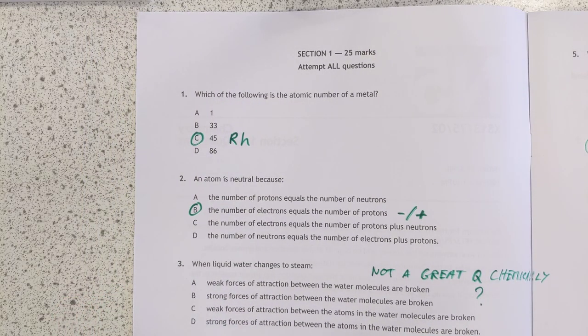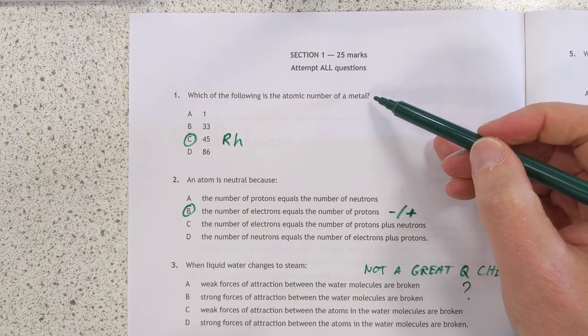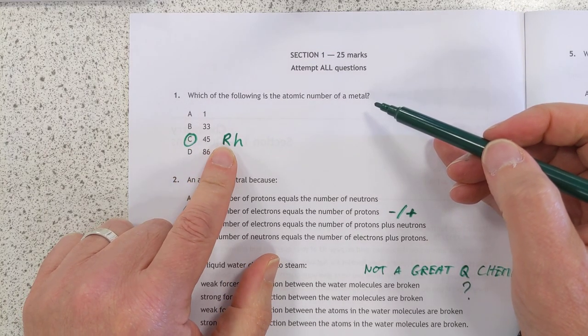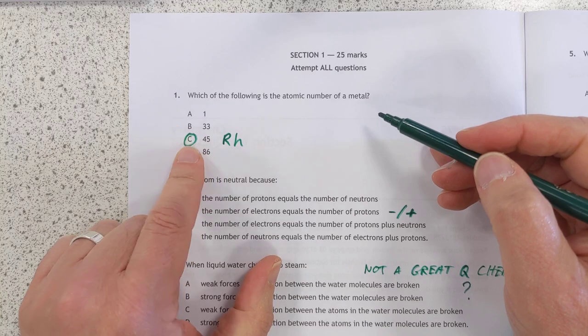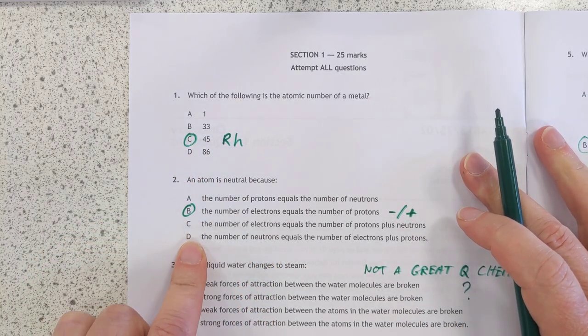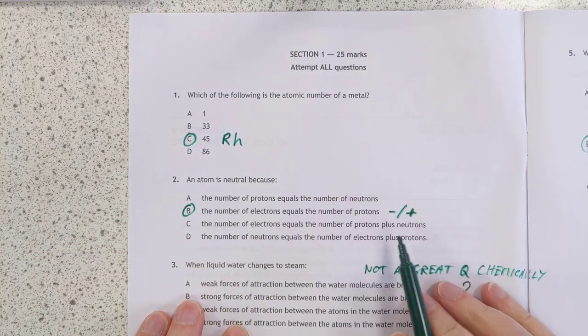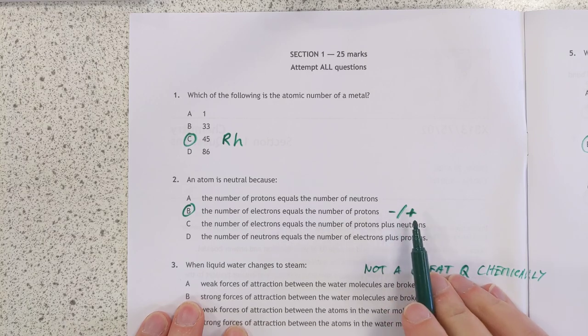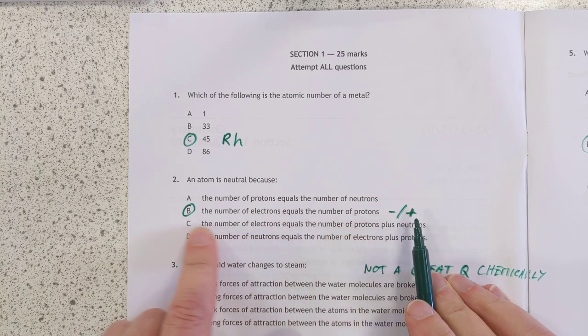Right, let's have a look. Atomic number of a metal, 45 is rhodium. It's on the left-hand side of the periodic table, so the answer is C. Number two, an atom is neutral because it has equal numbers of negatives and positives. That's electrons and protons, so that's B.